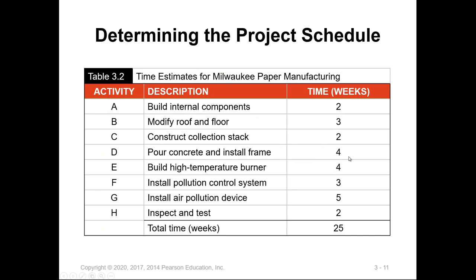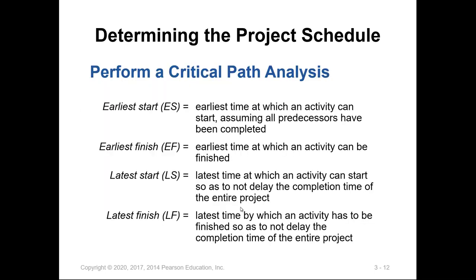If you just add the duration for each activity — say two weeks for A, three weeks for B, and so on — it might total 25 weeks. But this is not the right approach. With the sequence of activities and using the critical path method, we will get a different length for the project duration. There are also other terms that need to be defined in a critical path analysis to understand how to proceed.